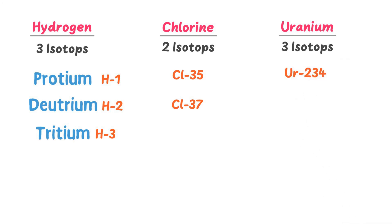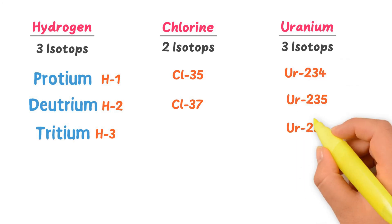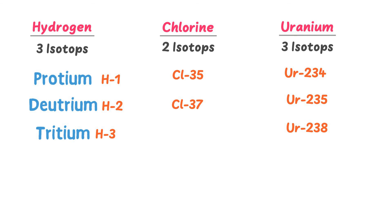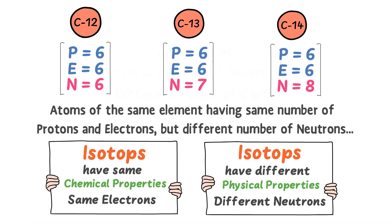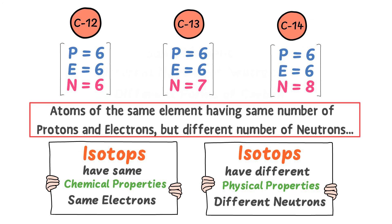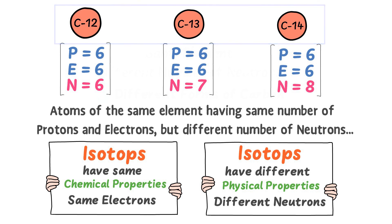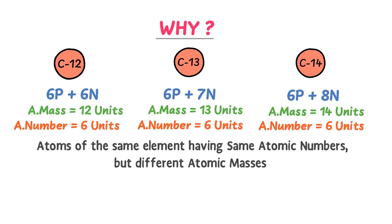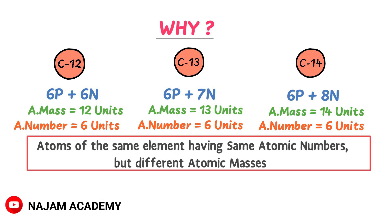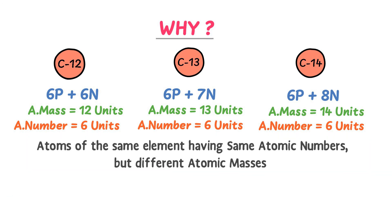To summarize: we learned that isotopes are atoms of the same element having the same number of protons and electrons but a different number of neutrons — like carbon-12, carbon-13, and carbon-14. Secondly, we can also define isotopes as atoms of the same element having the same atomic number but different atomic masses. This was all about isotopes.